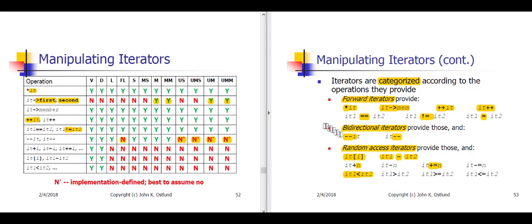Now, among these dozen container types in the standard library, the only ones that support random access iterators are vector and deque. You can add or subtract integer offsets from vector and deque iterators, you can use subscripting and subtraction on vector and deque iterators, and you can do relational comparisons of vector and deque iterators.